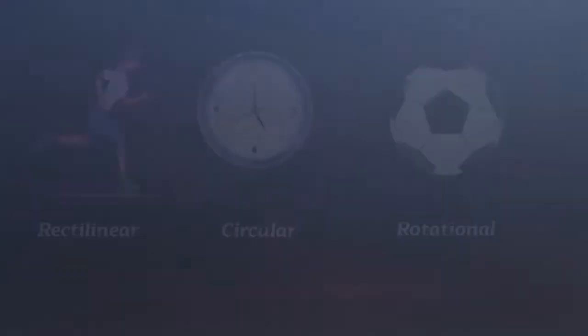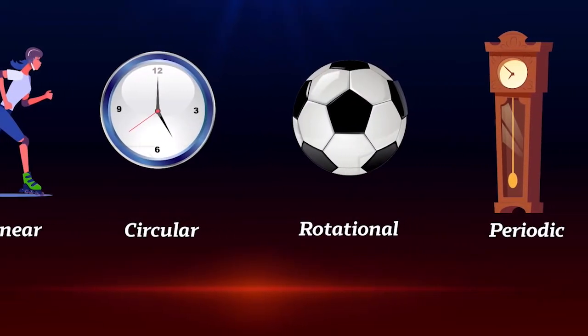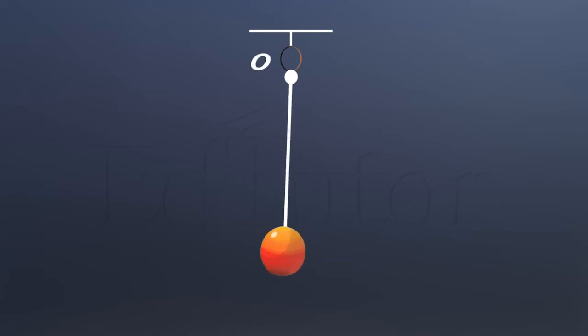You have learned about various types of motions in physics. Can you guess the name of a motion in which a body moves back and forth about a fixed point?